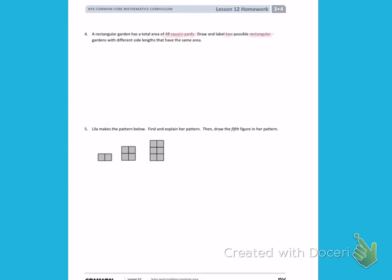I need to think about different multiplication problems that equal 48. One problem that equals 48 is 8 times 6. So I'm going to start with a rectangle that represents 8 yards and 6 yards, which will give me 48 square yards.